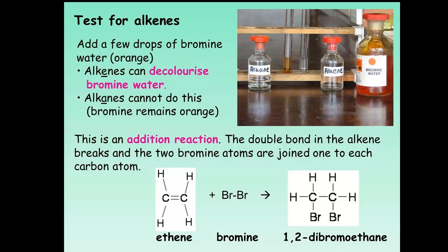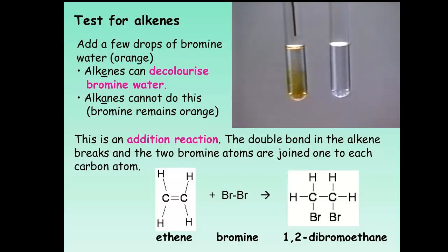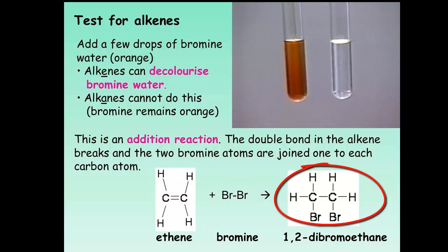There is a simple test that allows us to distinguish between an alkene and an alkane. Imagine that there are two bottles. One contains an alkene, one contains an alkane. All we must do is add a small amount of bromine water to each sample. The bromine water, which is orange in color, will remain orange with the alkane. The alkene, however, will be decolorized. The reason is that there is an addition reaction taking place. The double bond in the alkene breaks and the two bromine atoms from the bromine water is added to the alkene, forming 1,2-dibromoethane, a saturated molecule.